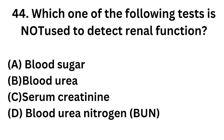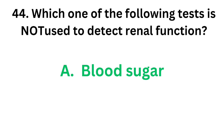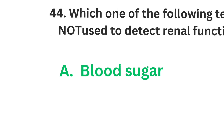Question number 44: Which one of the following tests is not used to detect renal function — meaning, which among the following is not a renal function test? Option A: Blood sugar. Option B: Blood urea. Option C: Serum creatinine. Option D: Blood urea nitrogen (BUN). The correct answer is option A, blood sugar. Urea, creatinine, and BUN are renal function tests.